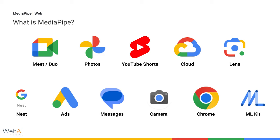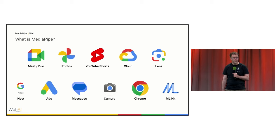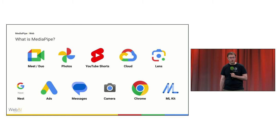So what is MediaPipe? MediaPipe is a cross-platform, open source, stream processing framework used across a wide range of teams, platforms, and products, including Meet, YouTube, Photos, and many more. These are just a few of our partners inside Google. So why is it such a popular choice? The answer is sharing. MediaPipe is designed to facilitate sharing code between pipelines, between platforms, and between products, so it's a great choice for a scalable ecosystem.